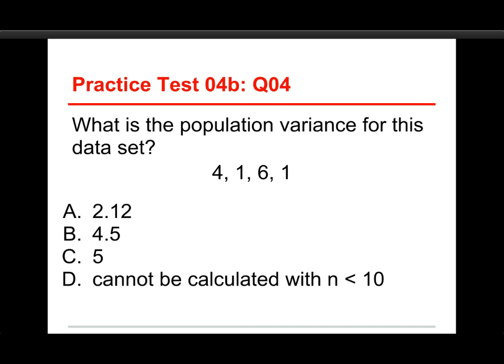Number four: what is the population variance for this data set? You've got four numbers — 4, 1, 6, and 1 — and your choices are 2.12, 4.5, 5, or cannot be calculated when the sample size is less than 10. The answer is 4.5. That last option — cannot be calculated with sample less than 10 — is just not true. Let me show you how it's actually calculated.